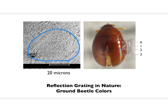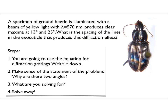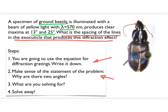Suppose you're out in the field picking up beetles and trying to figure out what you have. Investigators actually shine a light at the beetle and look at the diffraction. Here's data from a research paper on a particular ground beetle: for light of 570 nanometers, they see clear maxima at 13 and 25 degrees. The question is: what is the spacing of the lines in the exoskeleton that produces that diffraction effect? Use the diffraction grating equation, think about why there are two angles, figure out what you're solving for, and then solve. Pause the video and get started.